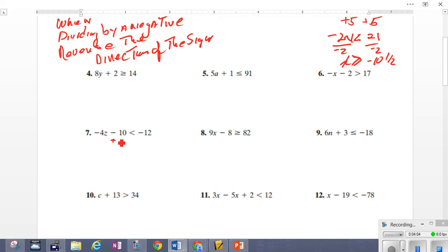Let's take a look down here. We're going to add 10 to both sides. Number 7 here. Add 10. It gives us negative 4z is less than negative 12. I divide by negative 4. I am dividing by a negative. So, I'm going to not forget to reverse my sign. 3. Z is greater than 3.